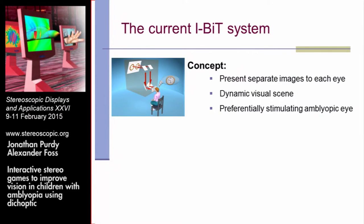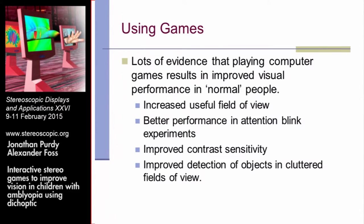So, on to what we've done. The IBIT system was developed at Nottingham at least ten years ago. The first implementation used mirrors and lenses to separate images to the different eyes. The central idea is to get the child to play a game while presenting different parts of the image to the different eyes, forcing the lazy eye to work harder. There's lots of evidence that playing computer games results in improved visual performance for normal people, and it doesn't seem to do anything bad to the eyes — so there are good reasons to use games.